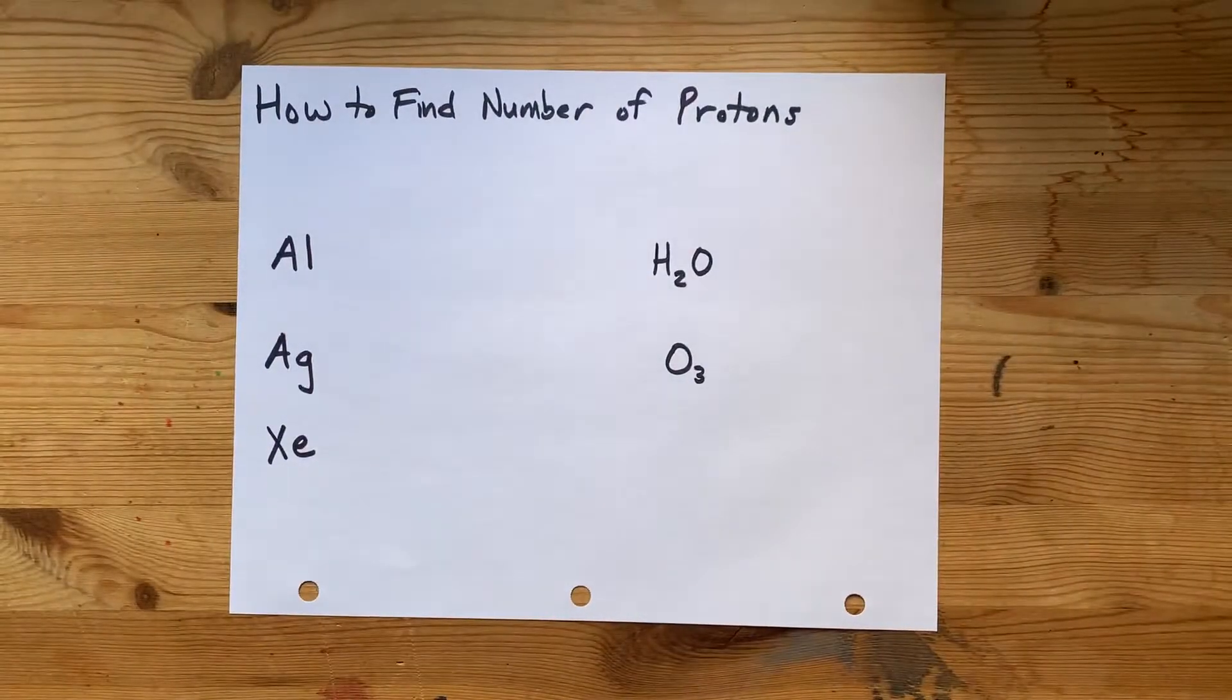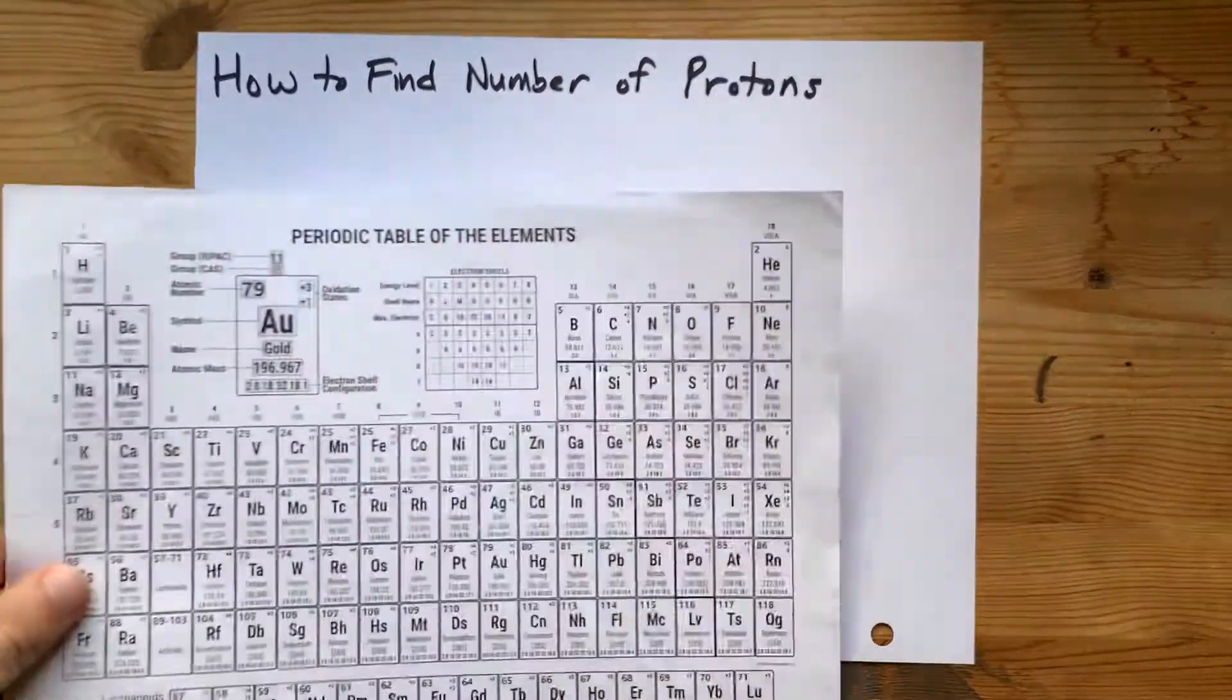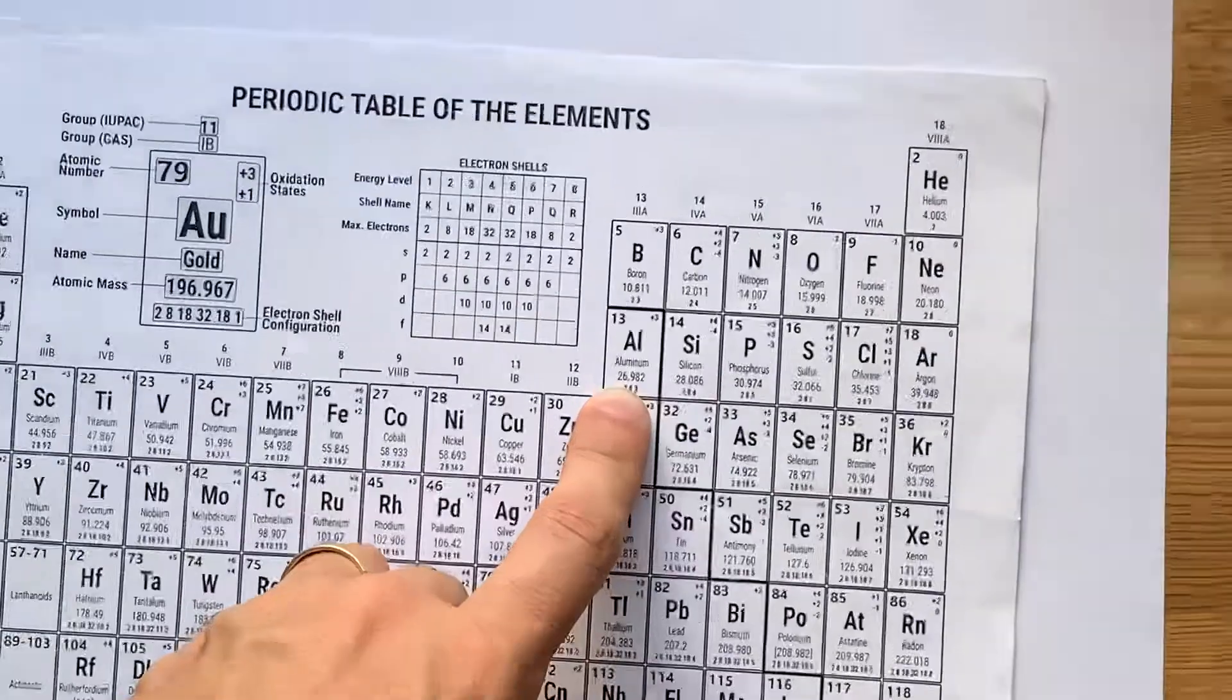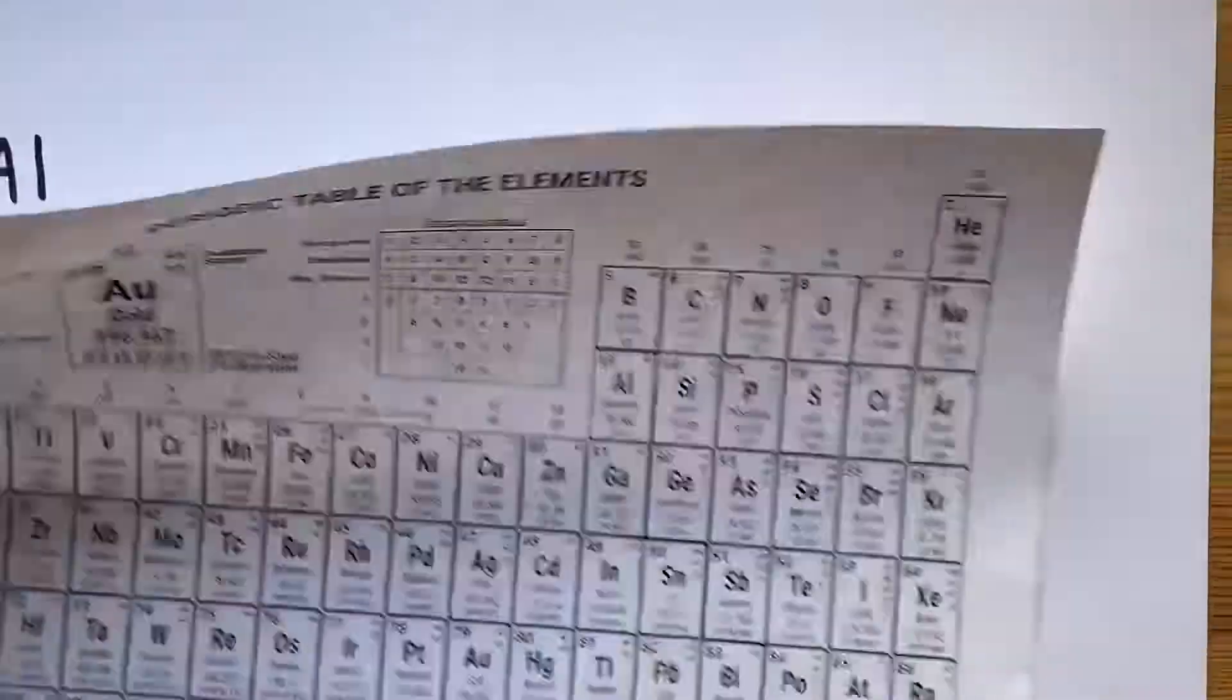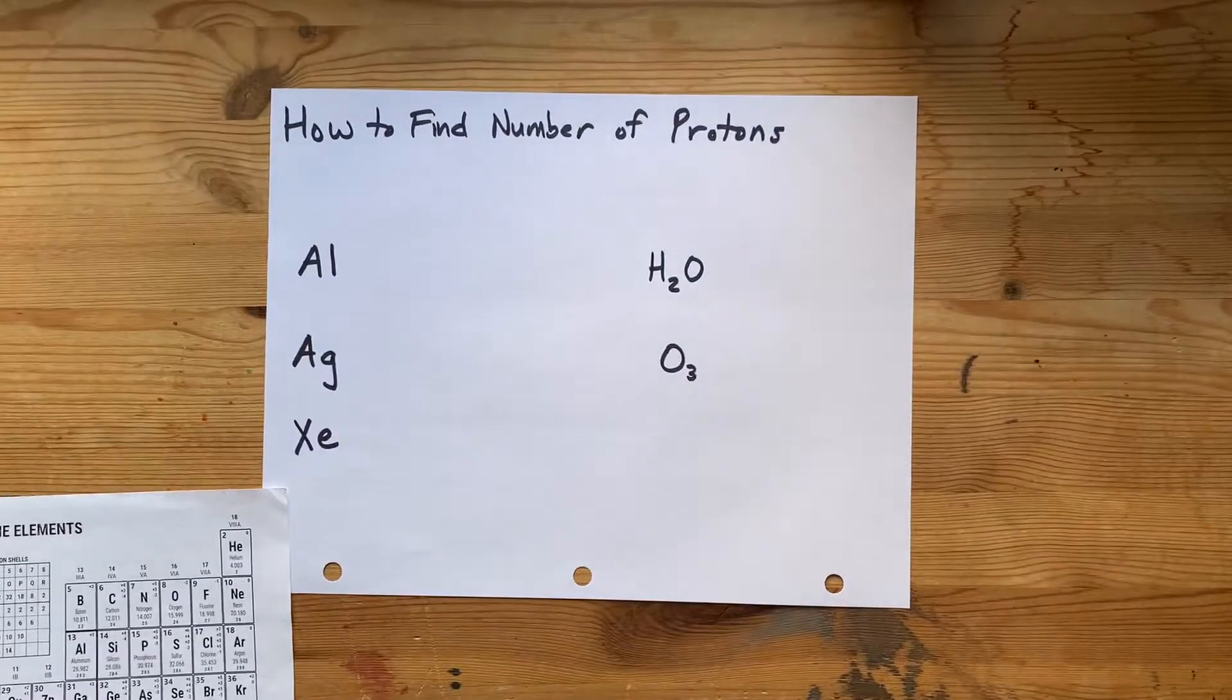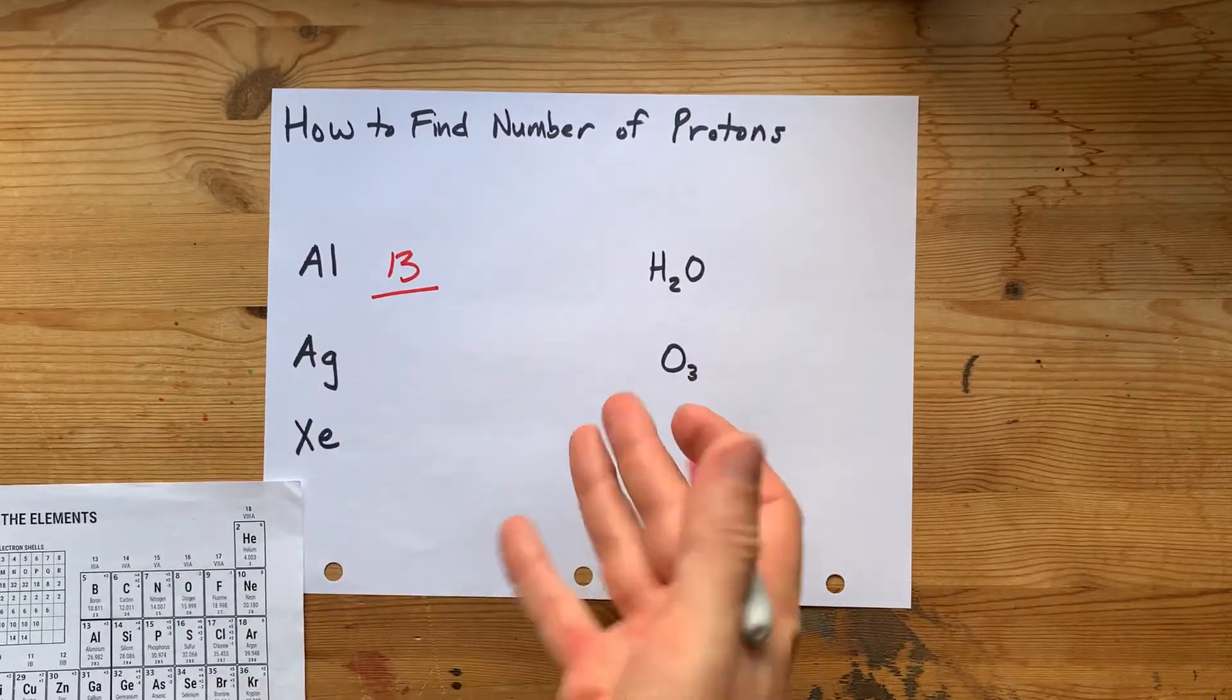Let's do a couple of examples here. How many protons are in aluminum? Well, AL on your periodic table is here. It is element number 13. So aluminum atoms have 13 protons in them. It's as simple as that.